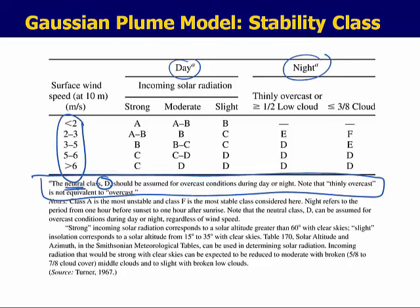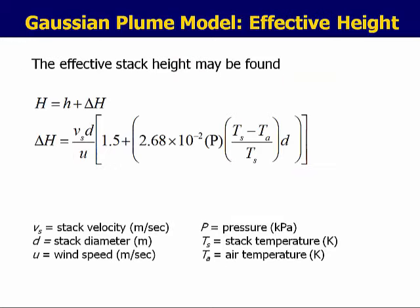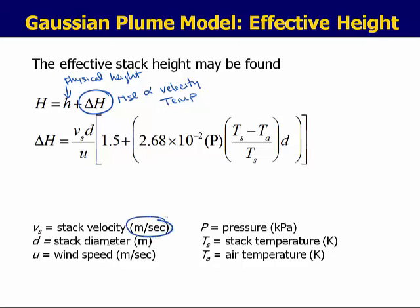Once you find the stability class, you can find S of Z and S of Y, given the effective stack height H and wind speed mu. If the effective stack height is not given, you solve for it using the physical stack height, little h, plus the rise of the plume. The plume rise is a function of the stack exit velocity, stack diameter, wind speed, pressure, and stack temperature — note that temperatures here are expressed in Kelvin.